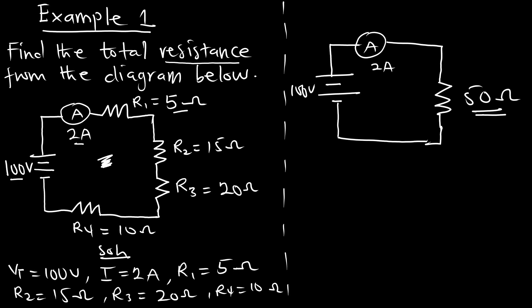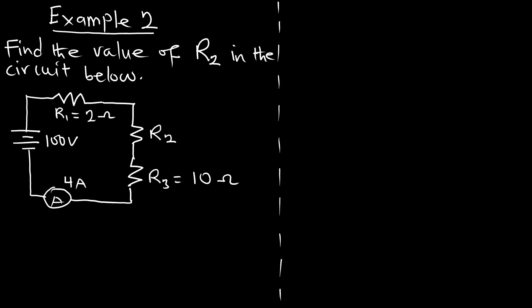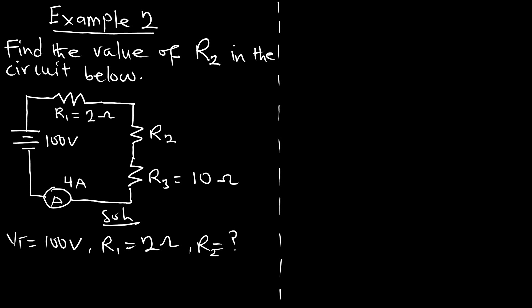Example 2: Find the value of R2 in the circuit below. We have a circuit with three resistors and must find the resistance of resistor 2. The voltage is 100 volts, resistor 1 is 2 ohms, resistor 3 is 10 ohms, and the ammeter measures the current as 4 amperes. So our parameters: VT = 100 V, R1 = 2 Ω, R2 = unknown, R3 = 10 Ω, I = 4 A.